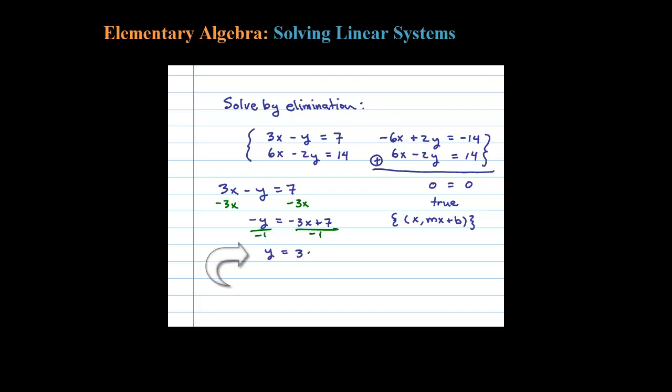So our answer is infinitely many solutions in set notation: (x, 3x minus 7). This is a dependent system and these are all the solutions where x could be any real number.